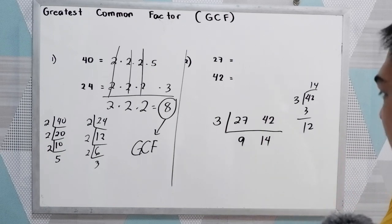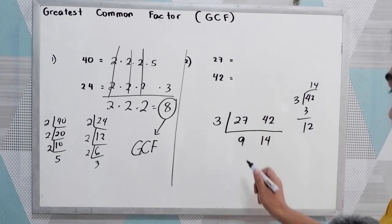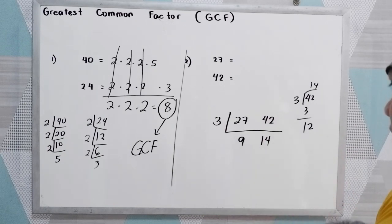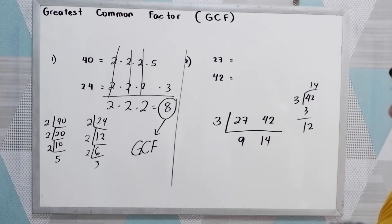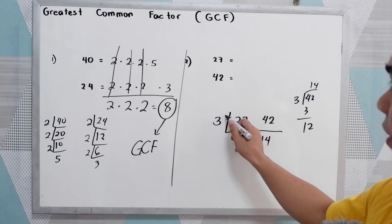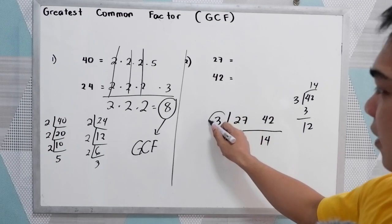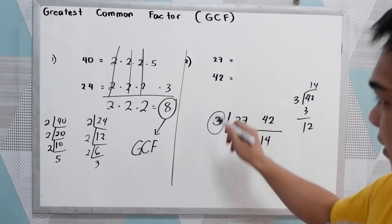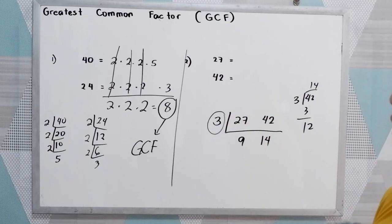Next we have 9 and 14. Do they have a common factor? So our GCF is 3.